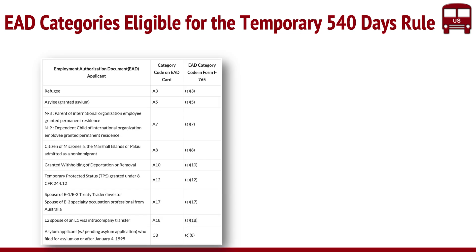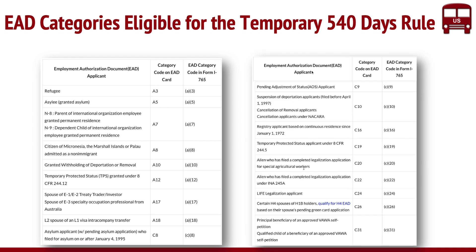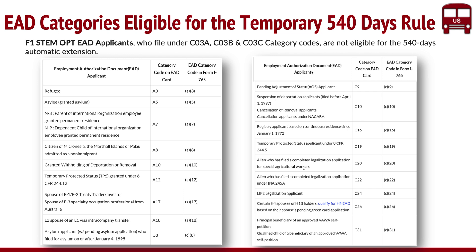In terms of categories, this is a list — you can read the full article for the entire list. Refugees, asylum, deportation or removal pending — A10s. When you fill the I-765 form you put in a number like A3, but on the card it shows as capital A3 — both are technically the same. A18 is for L2 spouses. The second important category for our audience is C26, which is H4 holders. Adjustment of status is another important one — C9. What is not included is F1 STEM OPT applicants: C03A, C03B, and C03C are not eligible for this 540-day automatic extension.